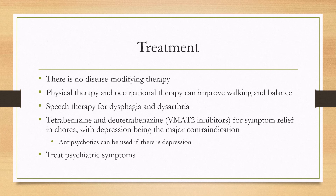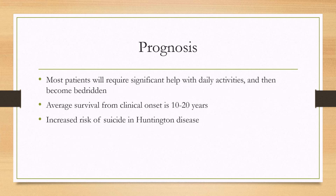In patients who do have depression, you can use antipsychotics, with second-generation antipsychotics preferred over first generation. Other psychiatric symptoms should be treated as well. Specifically for depression and anxiety, be careful when using SSRIs with the VMAT2 inhibitors. For prognosis, most patients will eventually require significant help with daily activities and become bedridden. The average survival from clinical onset is only 10 to 20 years, and there is an increased risk of suicide in Huntington disease.